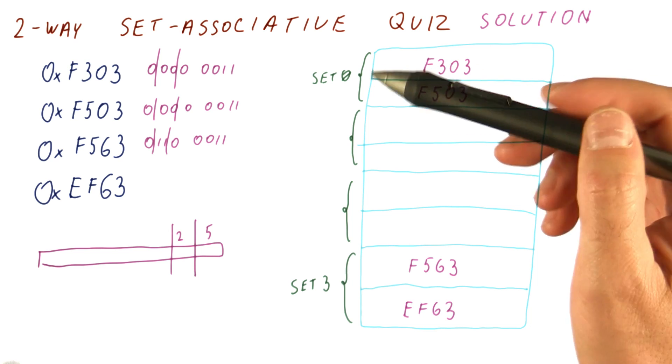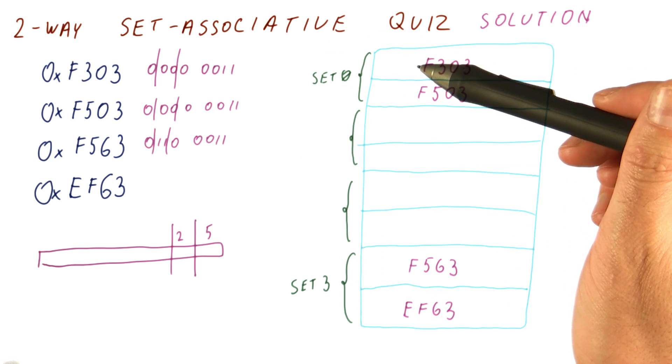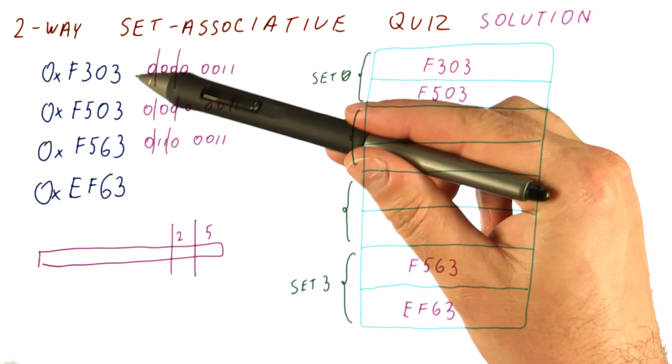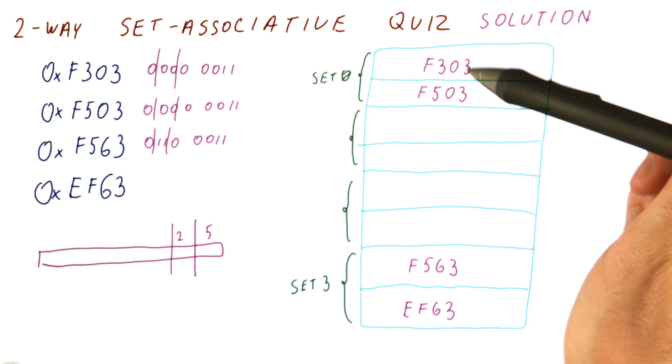So as you can see, with the two-way set associative cache, we can put more than one block that maps to the same place in the cache, and not have conflicts.